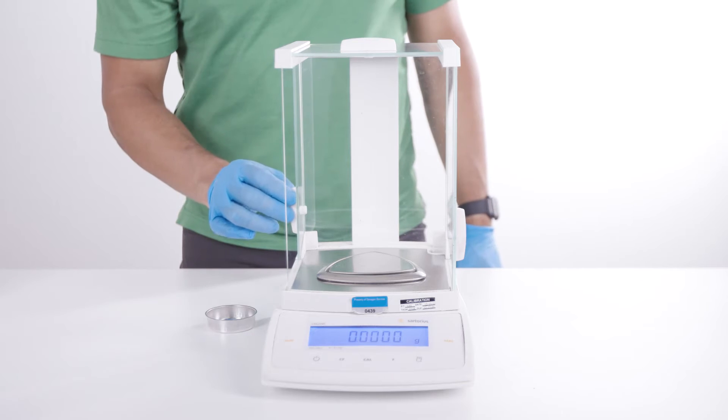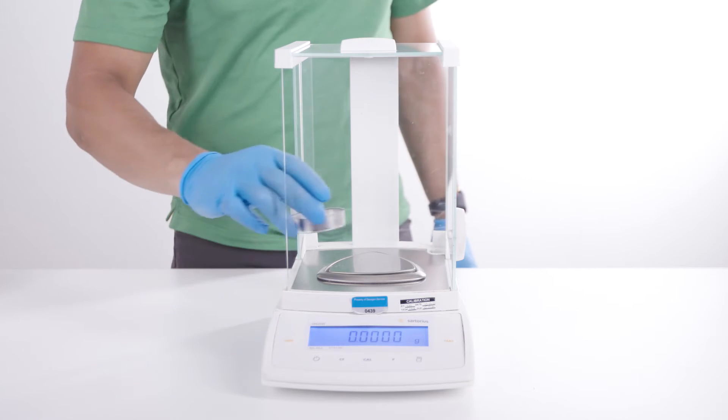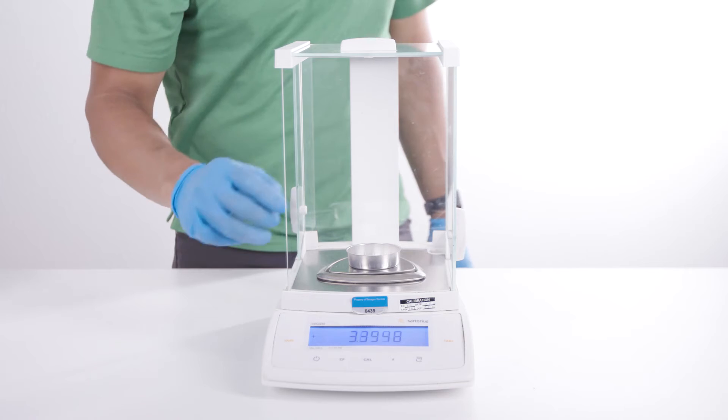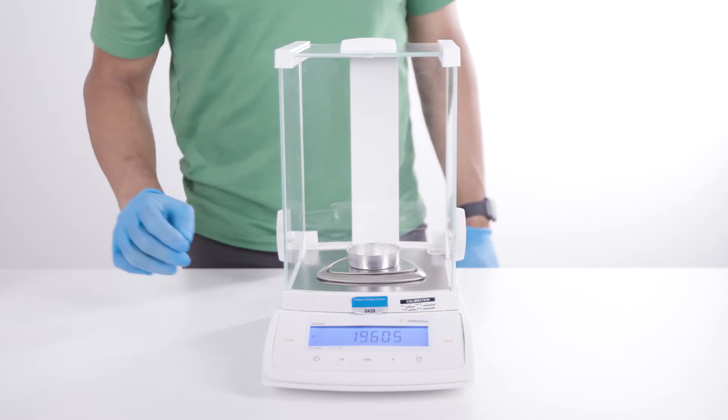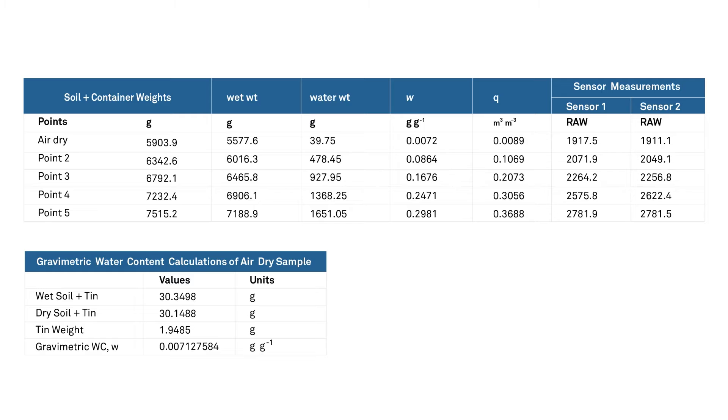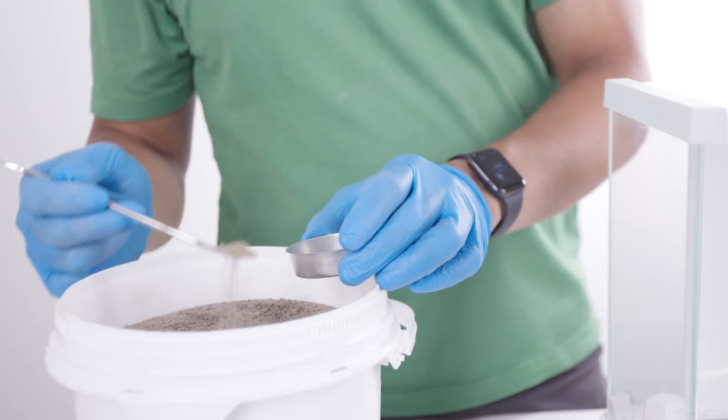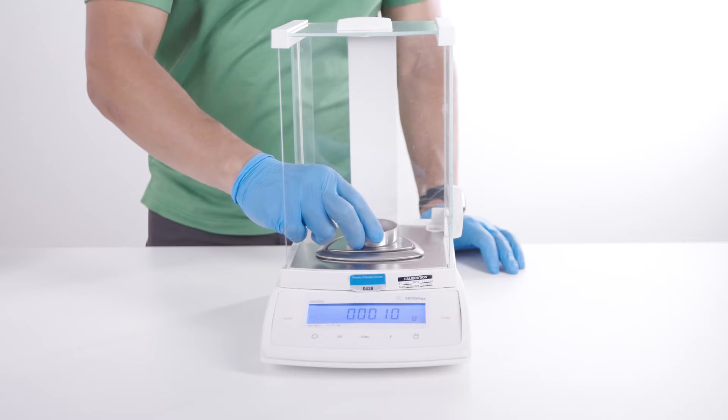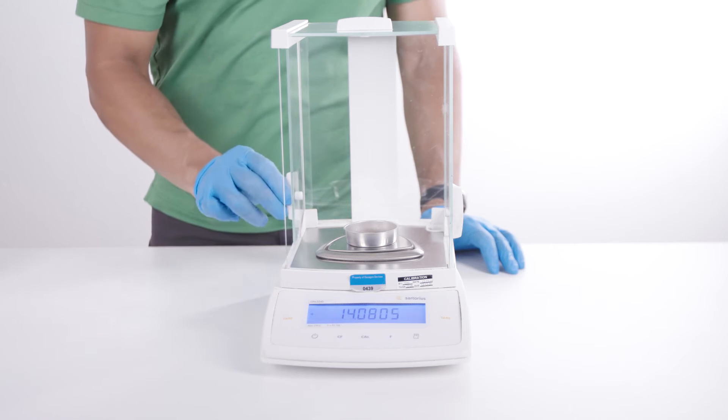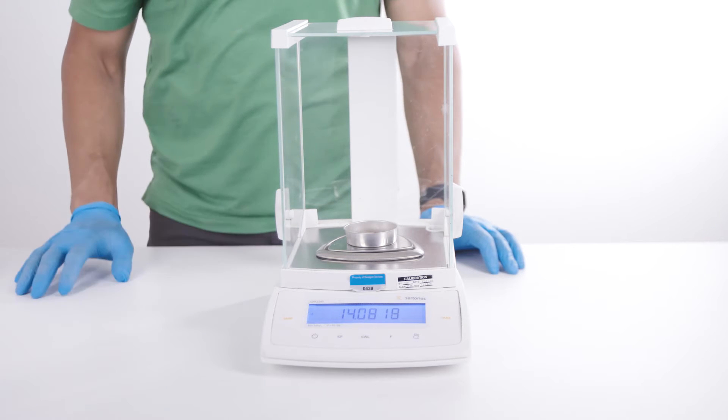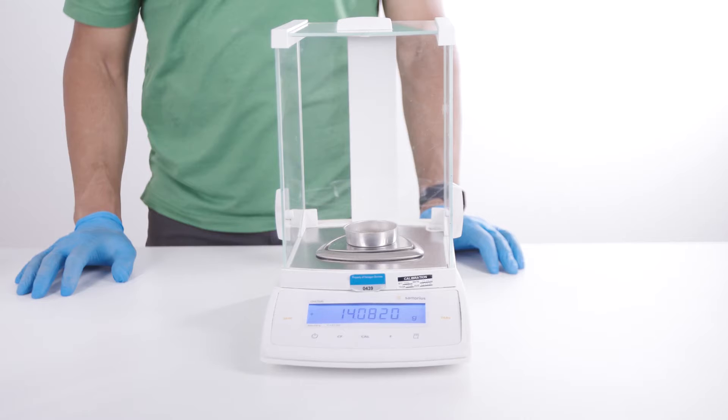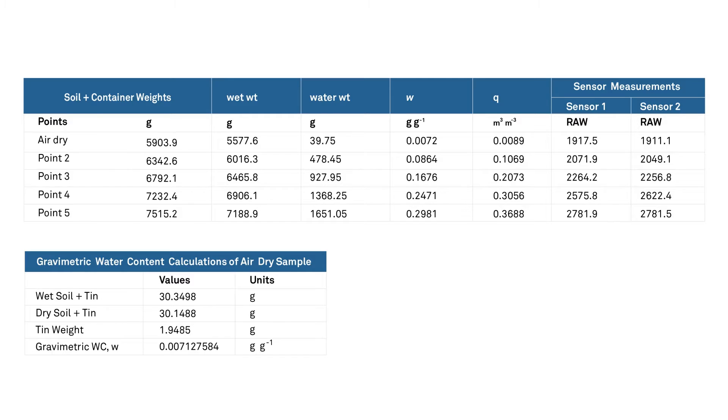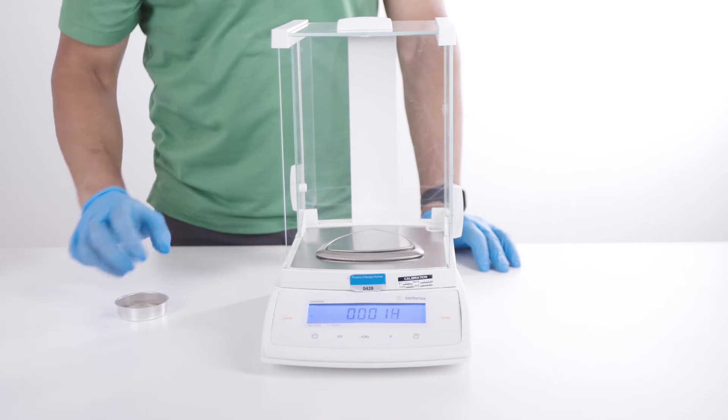To determine the initial air dry water content, take a small subsample. First, measure the mass of a clean dry soil drying container. Record the tare mass in Table 1. Remove 5 to 10 grams of soil with the spatula and place it into the drying container. To prevent water loss from the soil, immediately measure the mass of the soil plus the drying container. Record the weight in Table 1. Set the sample aside to be oven dried later.